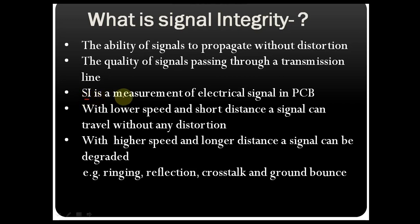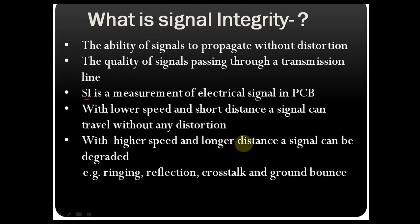SI is a measurement of an electrical signal in the PCB — the printed circuit board. With lower speed and shorter distance, a signal can travel without any distortion. However, with higher speed and longer distance, a signal can degrade, causing undesired effects such as ringing, reflection, and crosstalk.